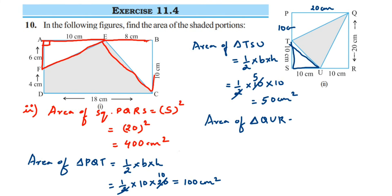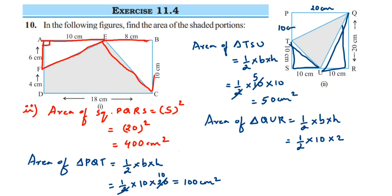Now area of triangle QUR equals half into base into height. Base is 10 and height is 20: half × 10 × 20. Cancelling 2 and 20 gives 10, so 10 × 10 = 100 centimeter square.